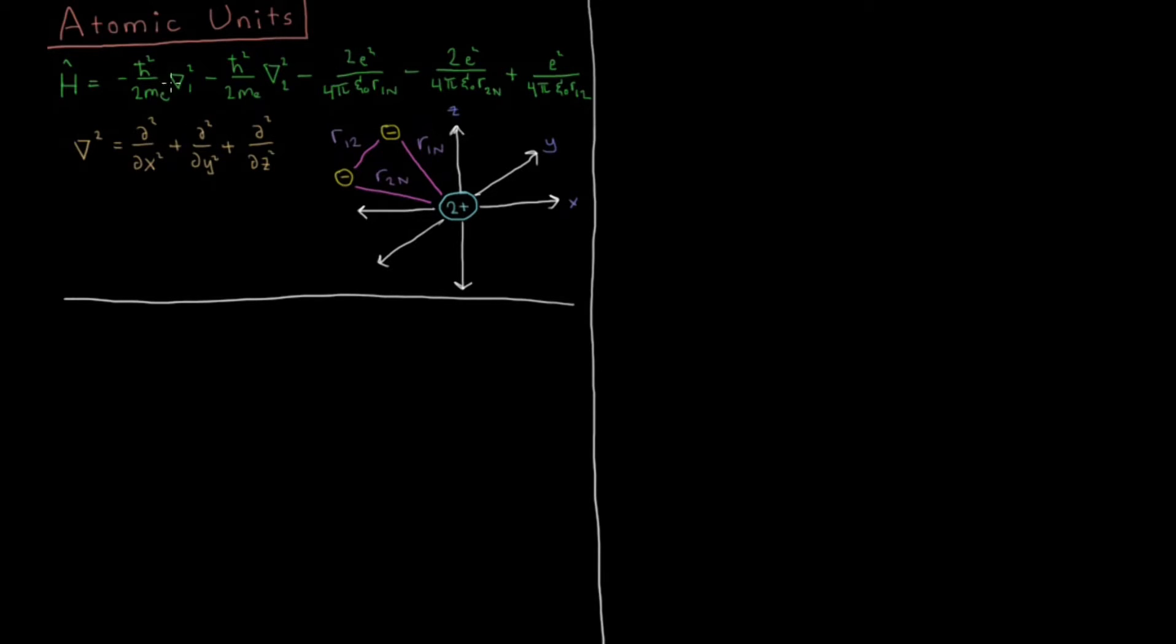What you can see in here is there's a lot of constants, there's a lot of things that during a calculation we would have to carry all around. This gets very big and very clunky very fast. And you can see that the number of terms which we would have to have are just going to blow up very quickly as we go to larger and larger atoms and eventually molecules.